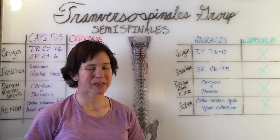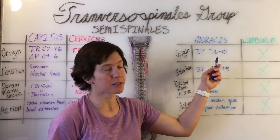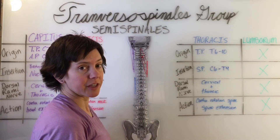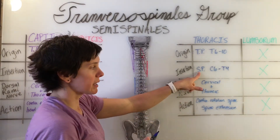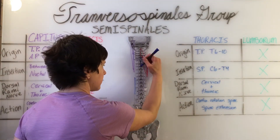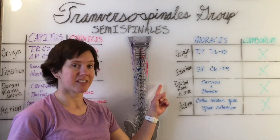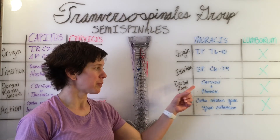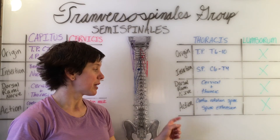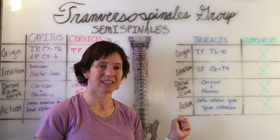The semispinalis thoracis originates on the transverse process of T6 through T10 and then inserts on the spinous process of C6 through T4. It has the same innervation as the other two muscles in this group, with the dorsal rami of the cervical and thoracic spinal nerves, and has the same action of contralateral rotation of the spine and spine extension.